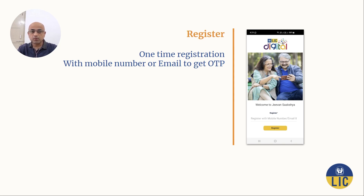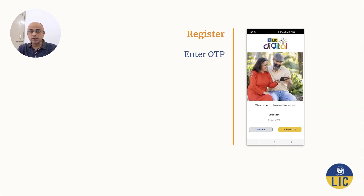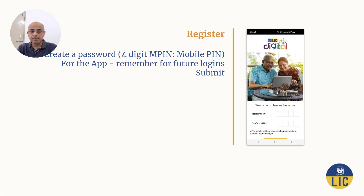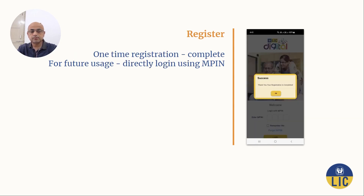The next step is a one-time registration. Enter your mobile number or email and enter the OTP that you receive. You then need to create a password for this app — a four-digit MPIN called mobile PIN. You need to remember this MPIN for future logins. Note down your MPIN, as registration is complete once it is created.